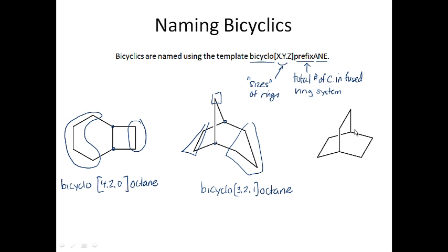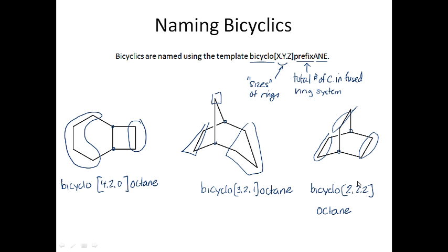What would be the name of this next molecule? If you're ambitious, stop the tape and try to name it. It has eight carbons total, so it's another bicyclo octane. Here are my two fused carbons. I've got two carbons there, two carbons here, and two carbons here. So this is bicyclo[2.2.2]octane. It's a relatively straightforward template for naming the bicyclic system, though it becomes a little more complicated when you add functional groups.